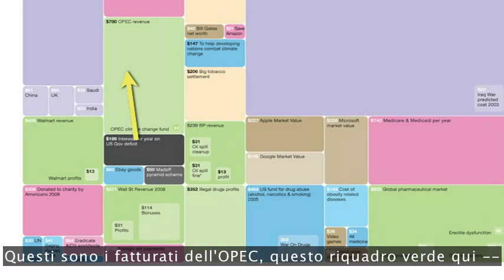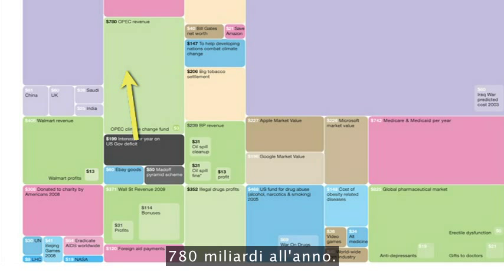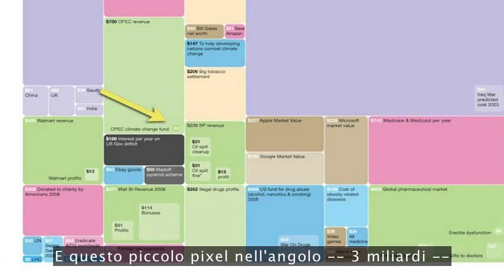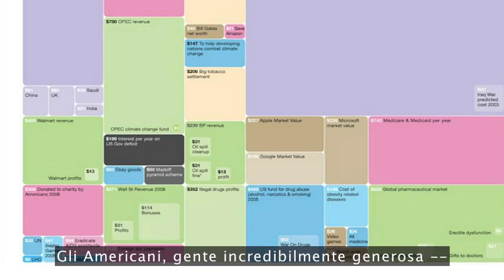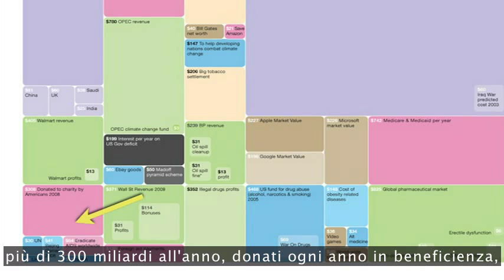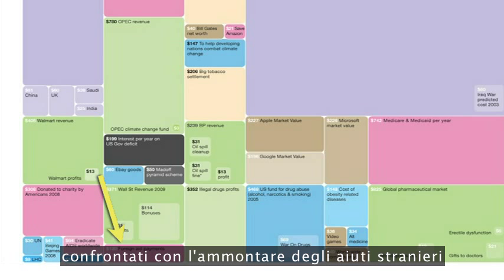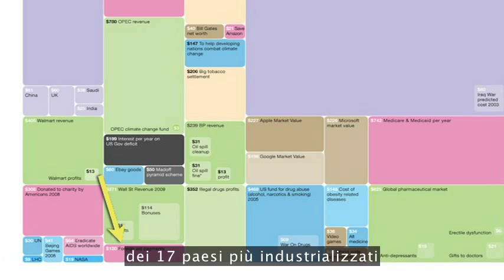This is OPEC's revenue, this green box here — 780 billion a year. And this little pixel in the corner, 3 billion, that's their climate change fund. Americans, incredibly generous people, over 300 billion a year donated to charity every year, compared with the amount of foreign aid given by the top 17 industrialized nations at 120 billion.